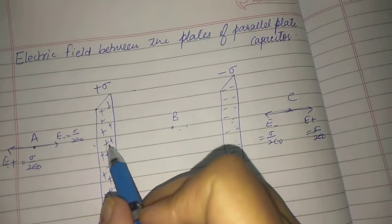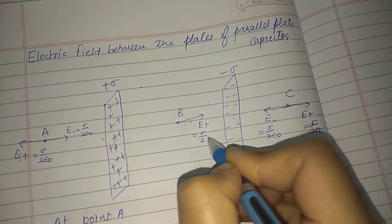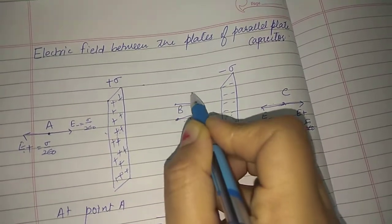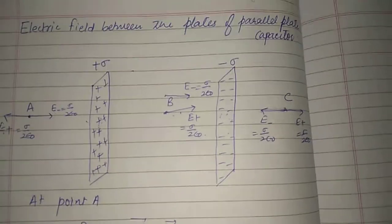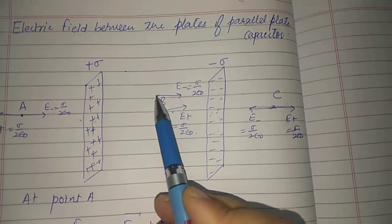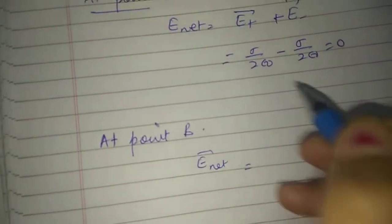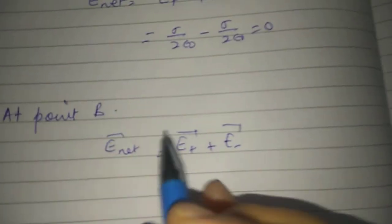At point B, due to the positive plate the electric field is directed away from the positive plate, with magnitude Sigma by two epsilon naught. Due to the negative plate the electric field is directed towards the negative plate, also Sigma by two epsilon naught. Both fields are equal in magnitude and in the same direction — away from positive and towards negative — so they add together.